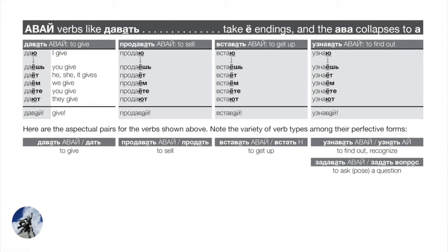Now let's look at the complete aspectual pairs. For giving: давать/дать — давать is an авай-verb, but the perfective дать is irregular. For selling: продавать/продать — we've added prefixes to both forms, but in terms of conjugating, we're still dealing with давать/дать. For getting up: вставать/встать — the imperfective is an авай-verb, and the perfective встать is an -н verb: встану, встанешь, встанет, встанем, встанете, встанут. That's one of those non-suffixed verbs, like жить, where we supply the -н and add the -ю endings. This verb is stem-stressed.